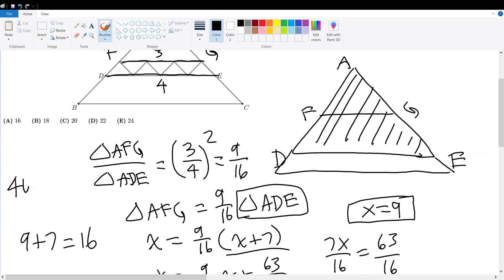So 40 minus 16 would naturally give us the bottom trapezoid area, which is what we're trying to find, which if we were to simplify, would give 24, bringing you to answer choice E.